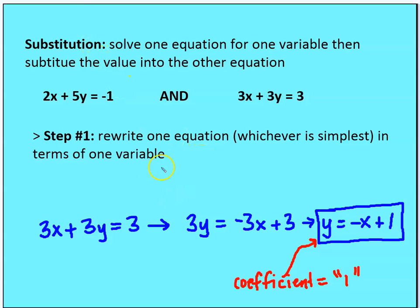Step one: rewrite one equation — I've chosen the second equation here — for one variable in terms of the other. You can choose whichever equation is simplest and gives integer values. When rewriting for y, the coefficient of y needs to equal one. If I were rewriting for x in terms of y, the coefficient for x would need to be positive one.